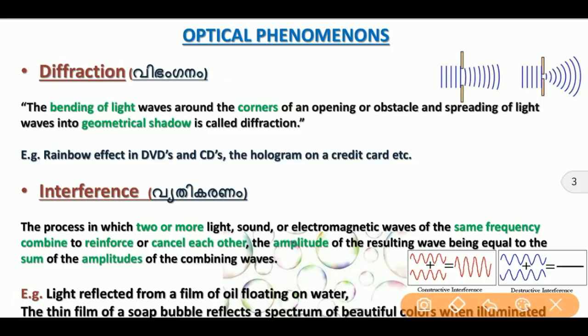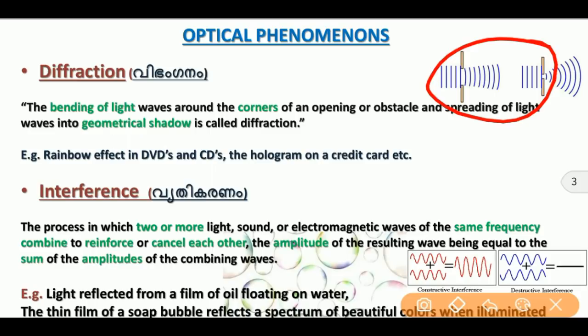We can see the pencil bend effect as an example of refraction. The bending of light waves around the corners of an opening or obstacle, and spreading of light waves into the geometrical shadow, is called diffraction. A CD or DVD showing a rainbow effect is an example of diffraction.